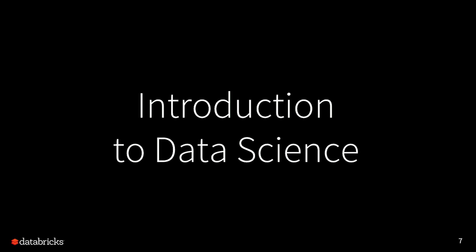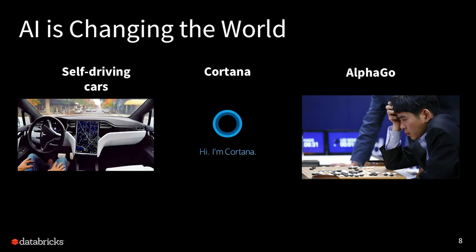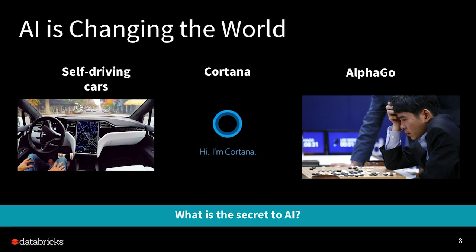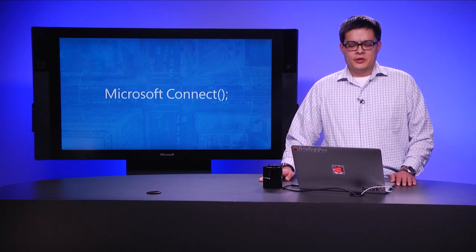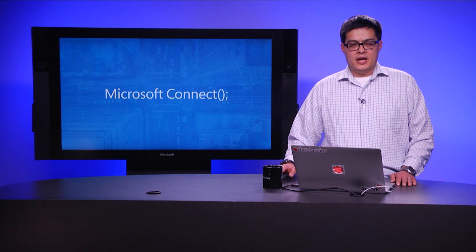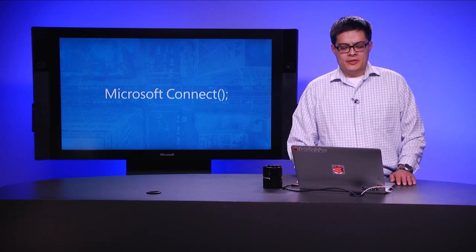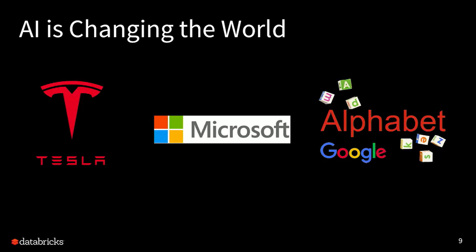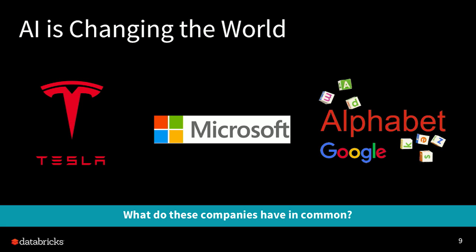Now into our introduction on data science. As many of you know, AI is changing the world. Artificial intelligence is starting to become pervasive — everything from self-driving cars from companies like Waymo, Cortana the digital assistant, as well as intelligent systems beating human beings at games like AlphaGo or chess. What is really the secret to AI? AI isn't new — it was introduced over 40 years ago with neural networks and other algorithms. What has really changed to make AI a reality in 2017? These are the companies behind this technology: Tesla on self-driving cars, Microsoft behind Cortana, Google behind AlphaGo and the Google Brain team. All these companies have a large amount of data — one of the key things about AI is really all about the data.